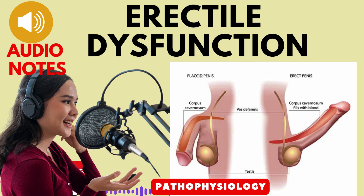In cases where other interventions prove ineffective, surgical implantation of a penile prosthesis may be considered. This involves the use of semi-rigid silicone rods or inflatable devices. Despite the associated risks, experienced surgeons report high patient and partner satisfaction rates with this approach.